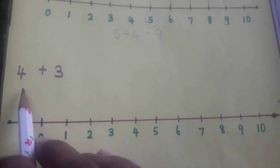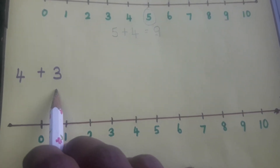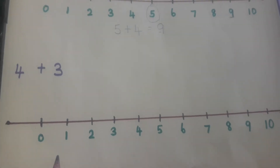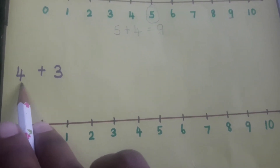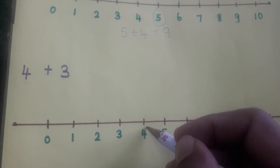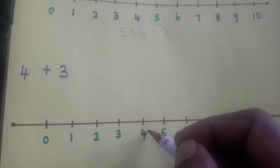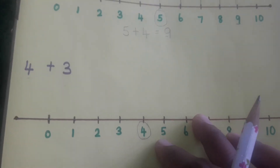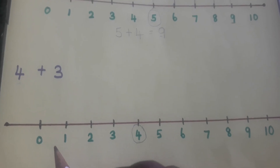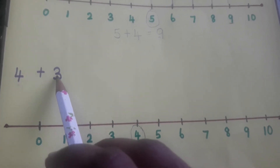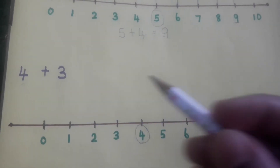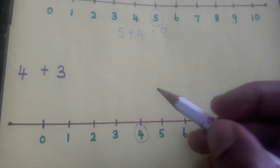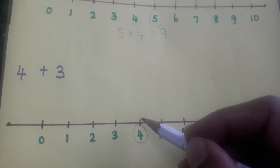Next, we are going to add number 4 and 3. Can you say, children, what we have to do first? Yes, very good — we have to circle the number 4 on the number line. Where is number 4? Here it is, so we circle it. Now we are going to add 3 with 4, so we have to jump 3 times after 4.